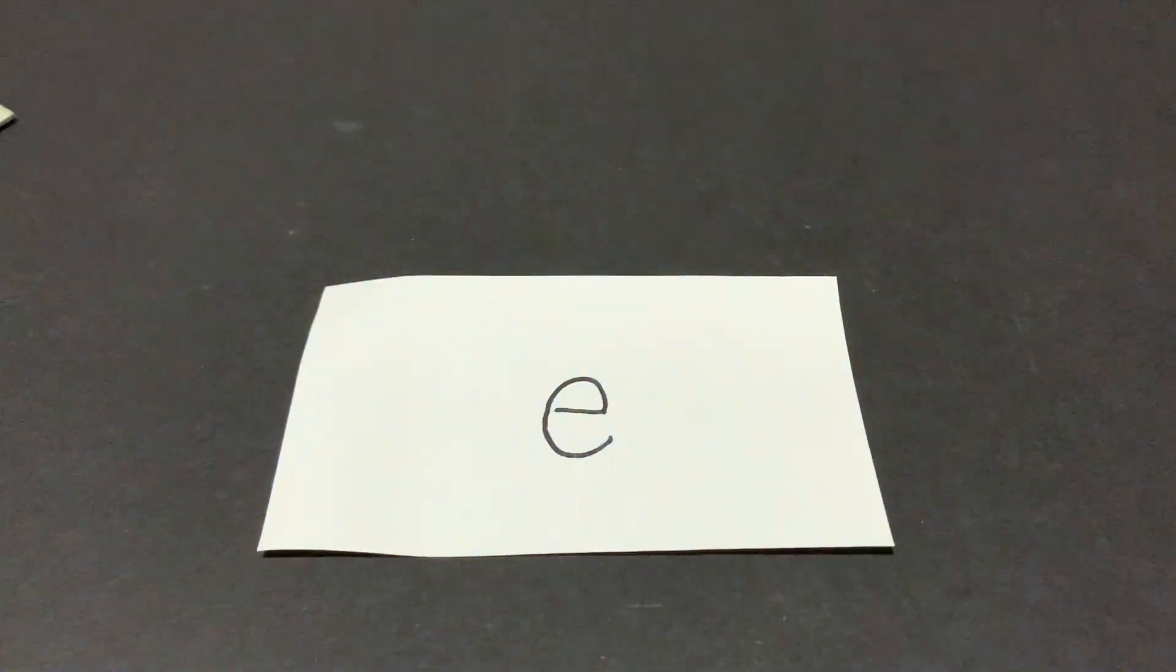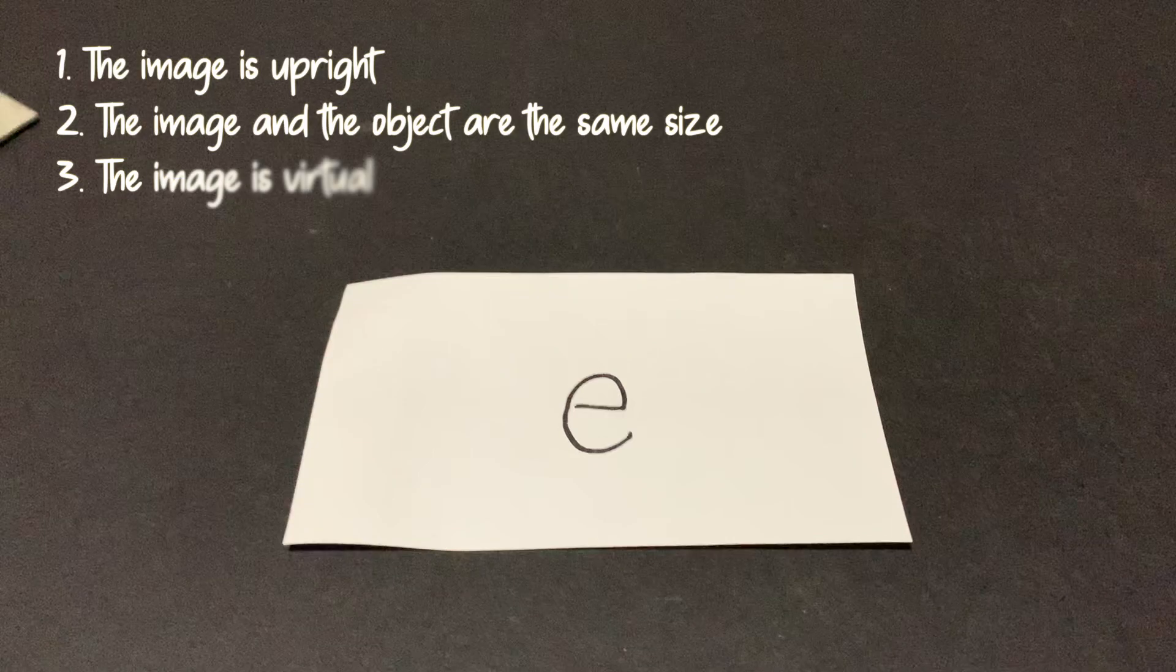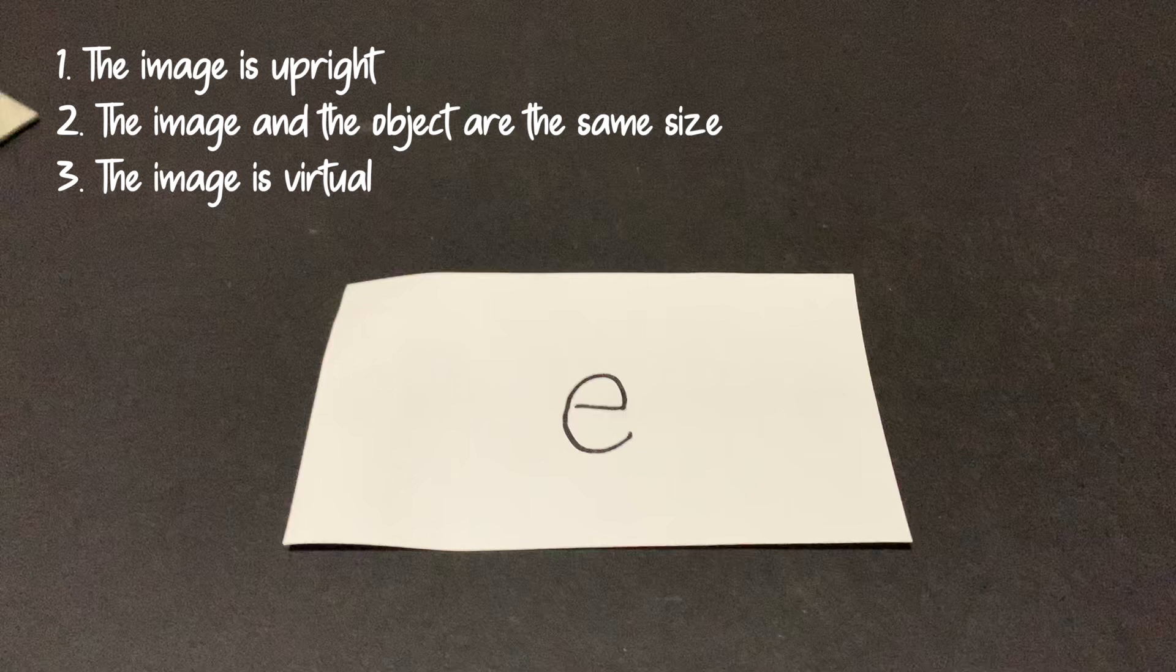Over here I've drawn a letter E on a piece of paper. We know that when we look at images in a mirror, the image is upright. The image and the object are of the same size.